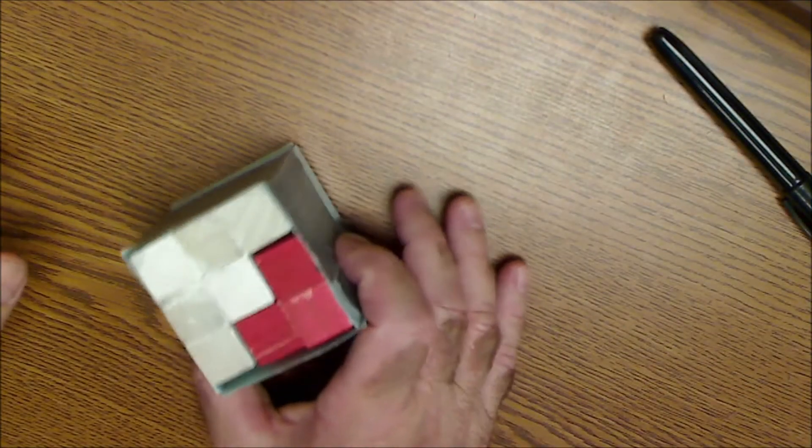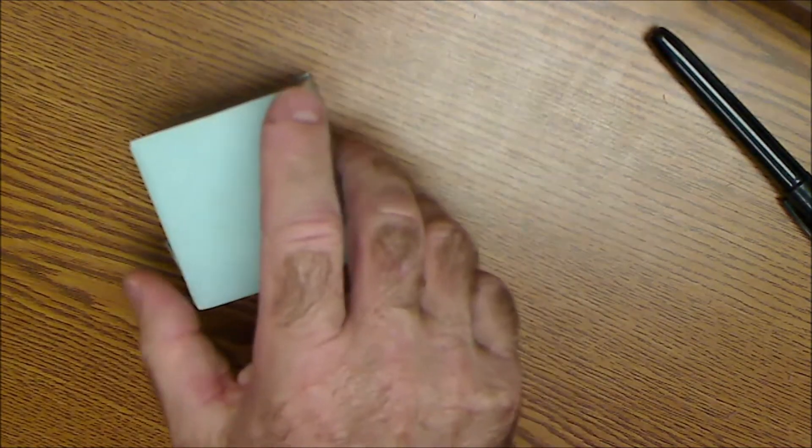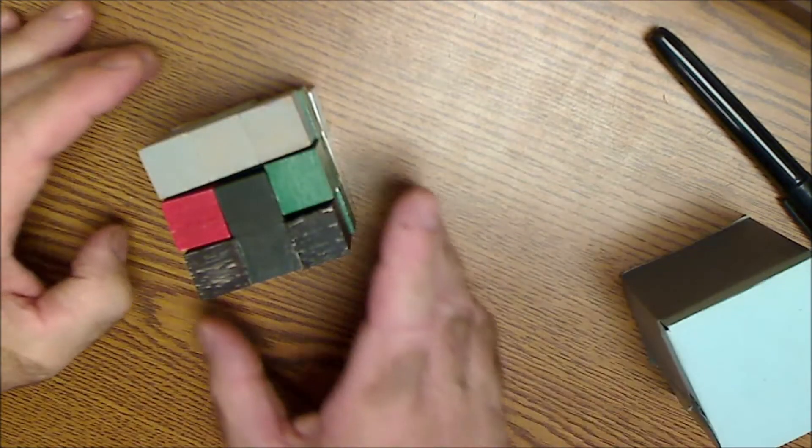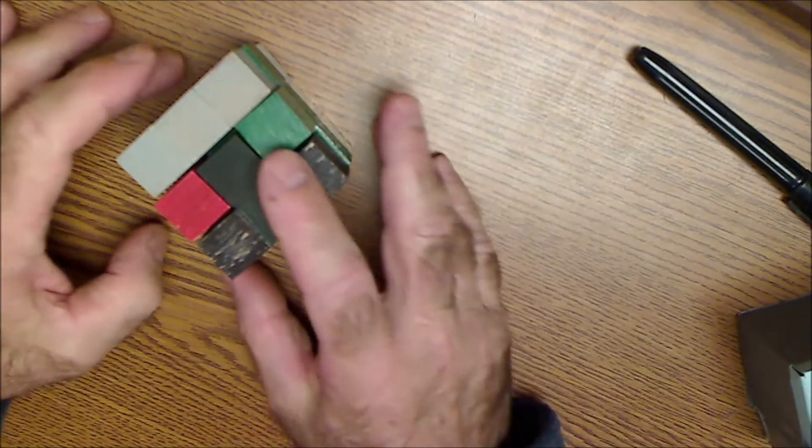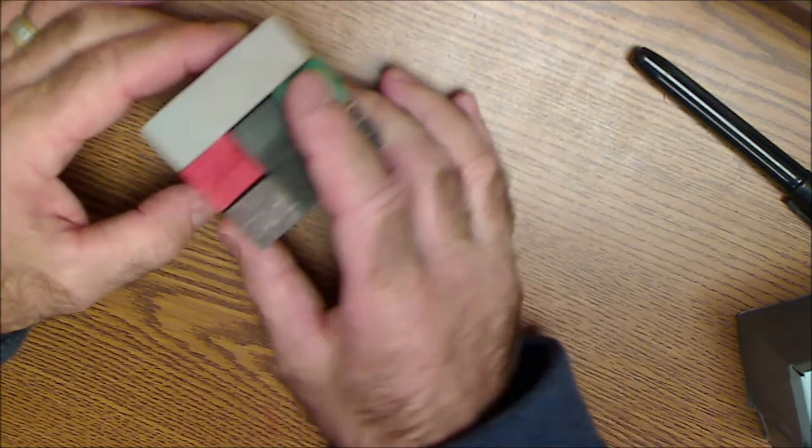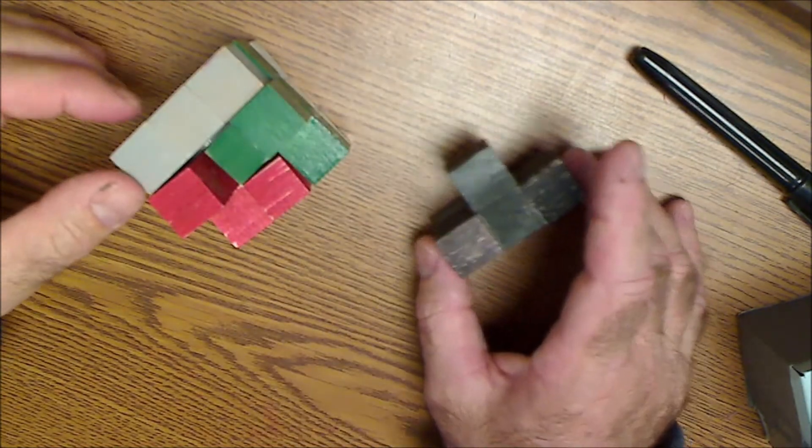Here's maybe a better view of the puzzle. There it is right there and they're just put together. I know you're looking down on it in 2D but there's the puzzle there. It goes together like this.